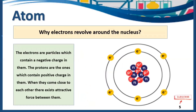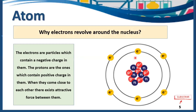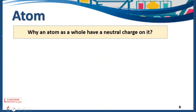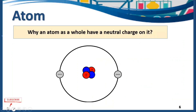Why do electrons revolve around the nucleus? As I told you, protons have a positive charge, neutrons have no charge, and electrons have a negative charge. So these positive-charge particles attract these negative-charge particles, and due to this attraction there is an electrostatic force between these electrons and protons. Due to this attractive force between the electron and proton, electrons revolve around the nucleus.